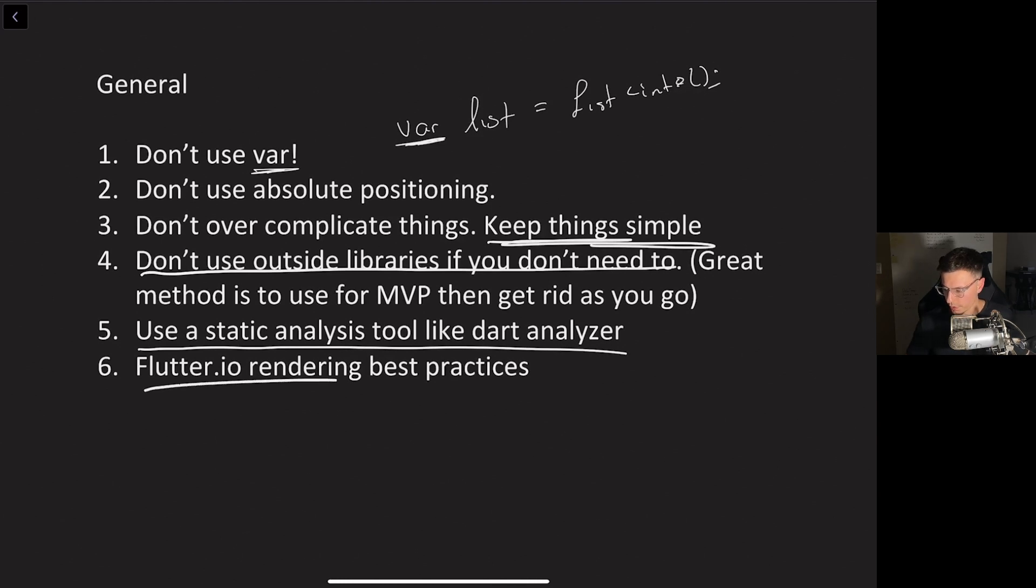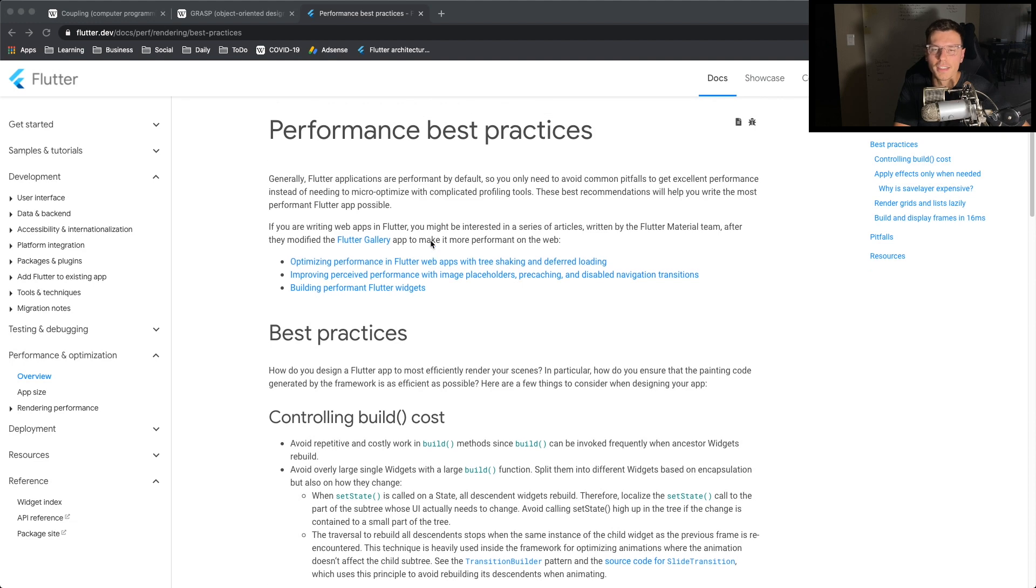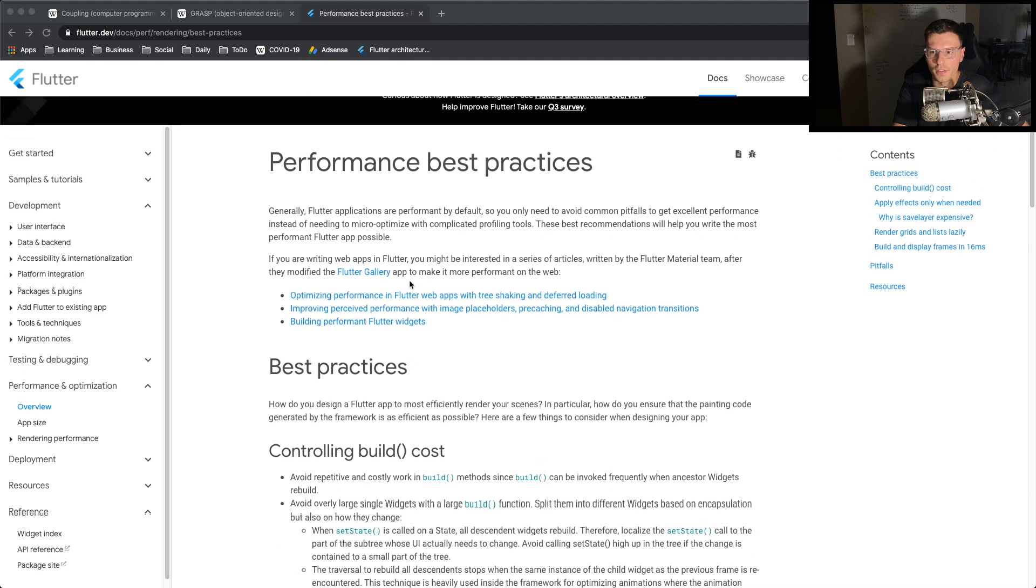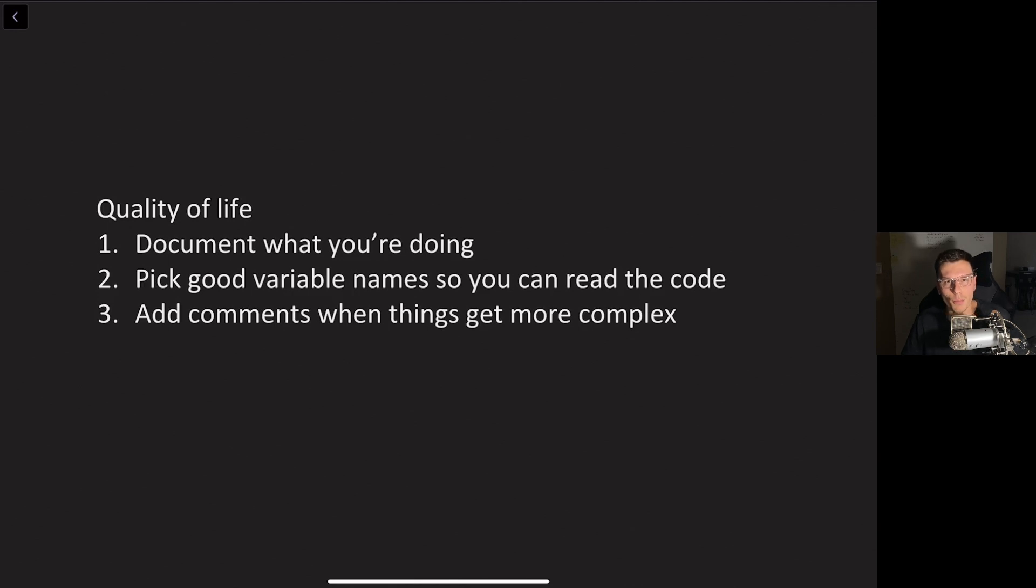And the last point is on Flutter.io there's a bunch of rendering best practices. So here you can increase your performance and make your Flutter app better and I'm sure other programming languages have things like this as well. So I would recommend to read through all these to make sure your app performance is top notch. So these last couple points are called quality of life and this will basically help you keep your code maintainable. Make sure you document what you're doing whether that means keeping like a wiki in GitHub wikis or taking notes on what you've done and why you did it. It will definitely help you in the future.